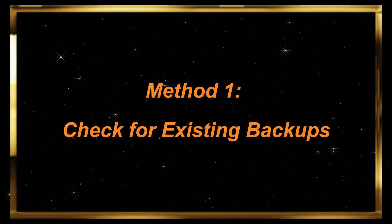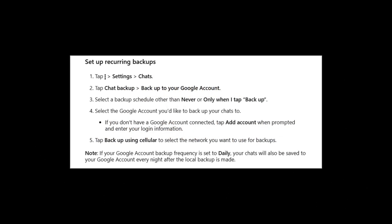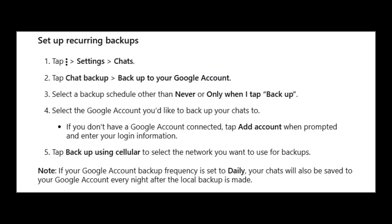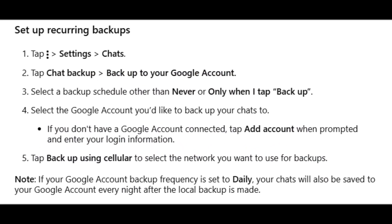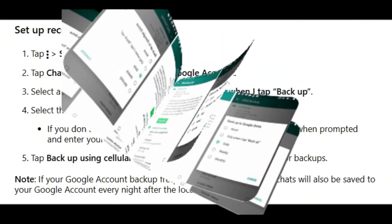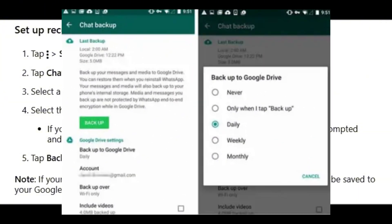Method 1: Check for existing backups. WhatsApp regularly backs up your chat history to Google Drive on Android, depending on your settings. If your deleted messages were included in a backup, you can easily restore them by reinstalling WhatsApp.